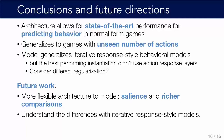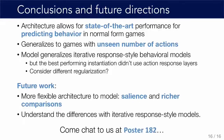In summary, we have a model that gives state-of-the-art performance for predicting the behavior of human players in normal form games. It generalizes to games with an unseen number of actions — even numbers we haven't seen in our training set. Our model explicitly generalizes the iterative response style models from the behavioral game theory literature. But interestingly, our best performing models didn't need that iterative response component we built in. A future question is how the model is achieving its performance without it, and we'd also like to expand the architecture to model salience and allow for richer comparisons between actions.